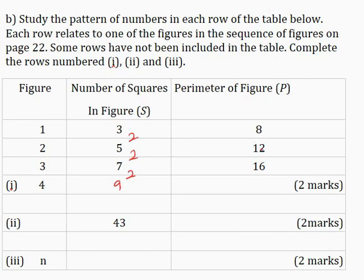In the same way, let's check and see if there's a common difference for the perimeter of the figure P. 12 minus 8 is 4, and 16 minus 12 is 4, so there is a common difference as well. Therefore, 16 plus 4 is 20.